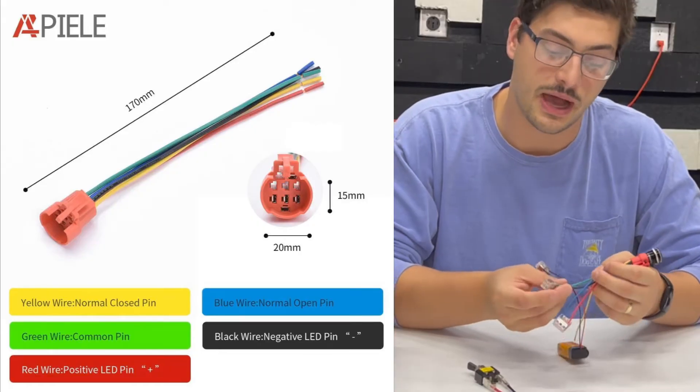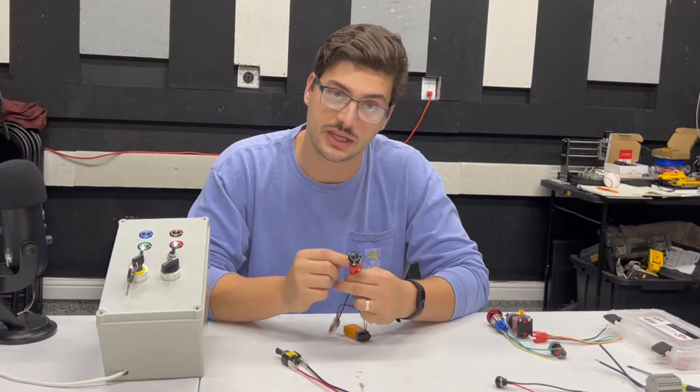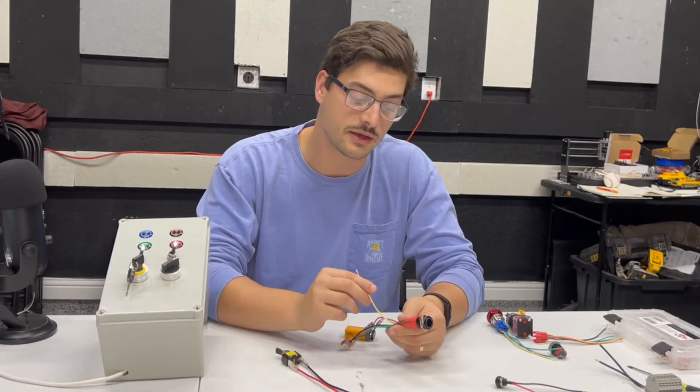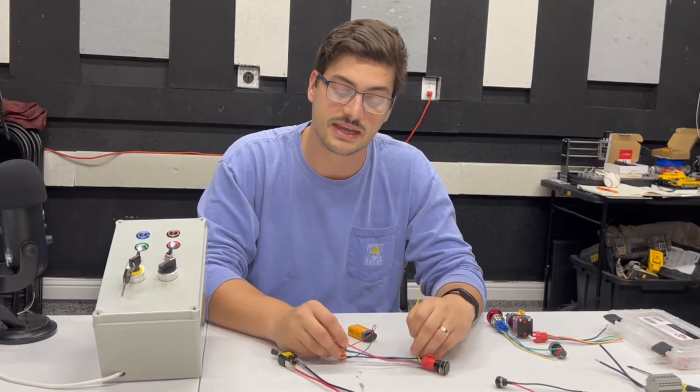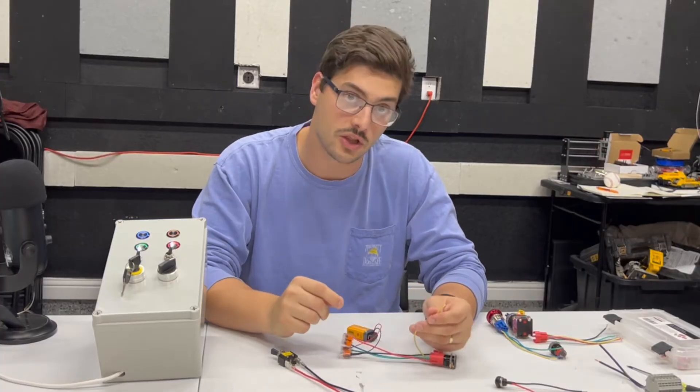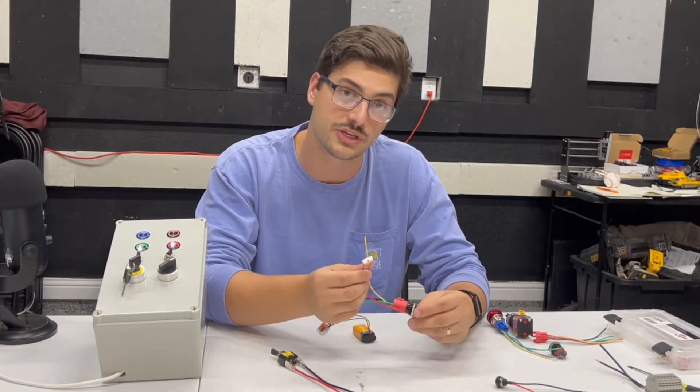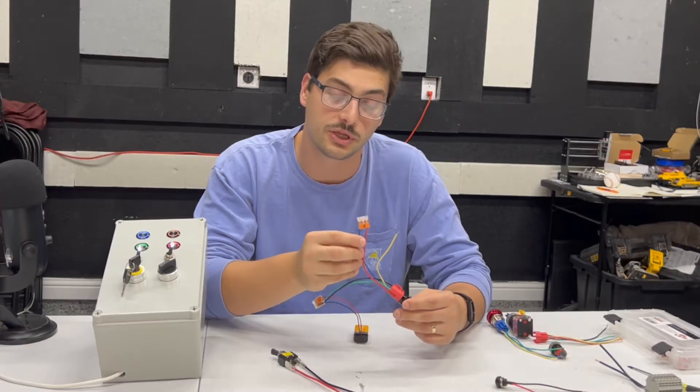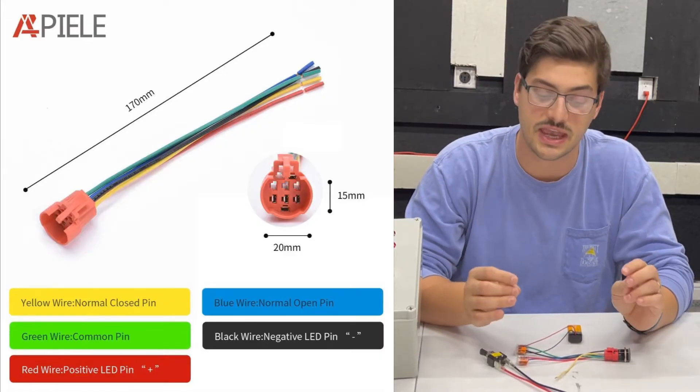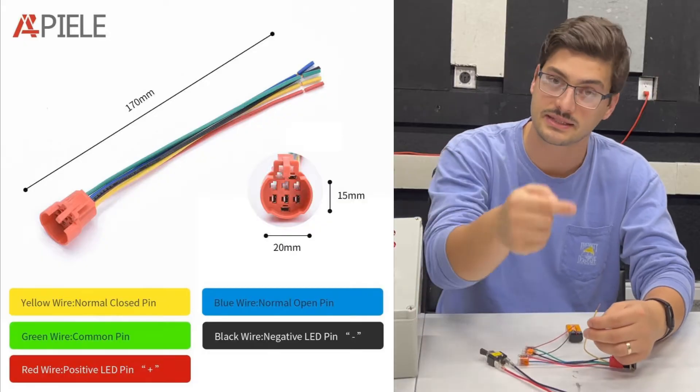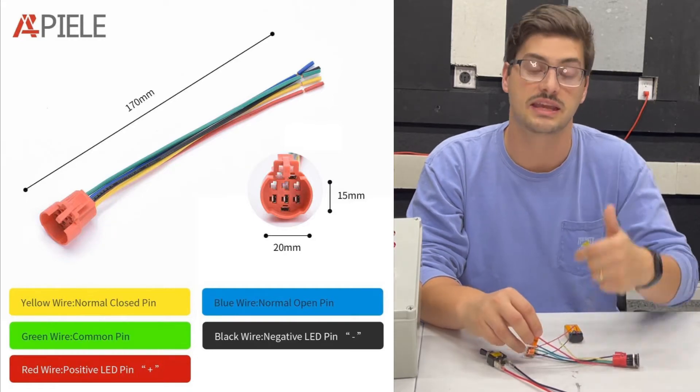In our case, we'll put our positive power from the nine volt battery on the common wire, which is green for these buttons. When I'm not pushing in my momentary push button, one of the wires will read nine volts, and the other wire will read zero volts. The wire that's going to read nine volts when it's not being acted upon is the normally closed wire, which in this case is yellow. The wire that is going to only read nine volts when we're pushing the button in is the normally open wire, or blue in this case. So when you have a device that offers you both normally open and normally closed feedback, there's a wire there that will be connected to common until you push the button in, and there's another wire there that won't be connected to common until you push the button in.